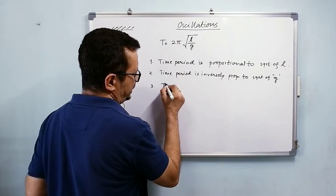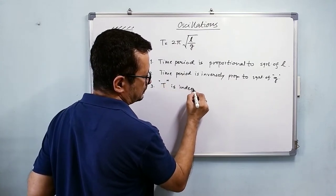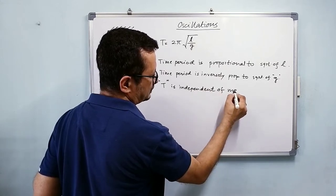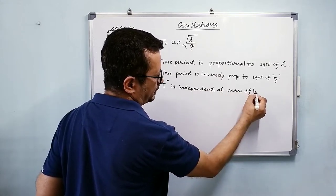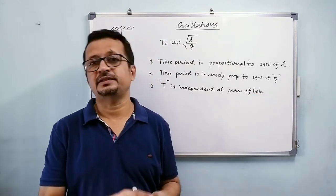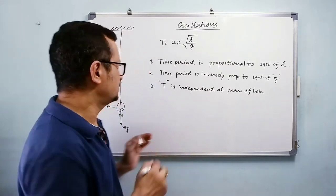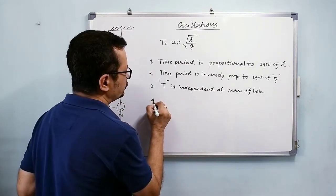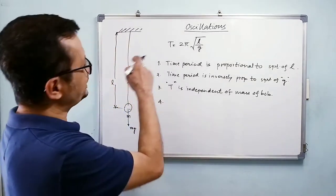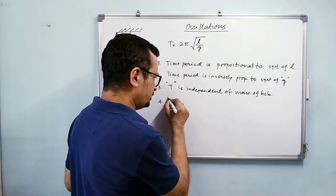It is dependent on length, it depends on g at that place, it is independent of mass. And then the fourth one: what about the amplitude? Do you see any term for amplitude here? No. So time period is independent of amplitude.